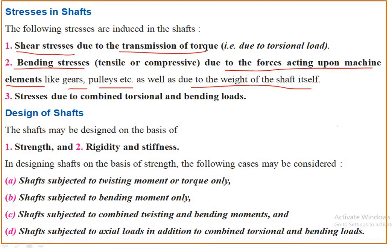The major stresses which get induced in the shaft at the time of power transmission are shear stress and bending stress. Both of these stresses are induced simultaneously — these are combined torsional and bending loads. On the basis of induction of shear stress, on the basis of induction of bending stress, and on the basis of stresses due to combined torsional and bending loads — these are the major stresses which get induced in the shaft.